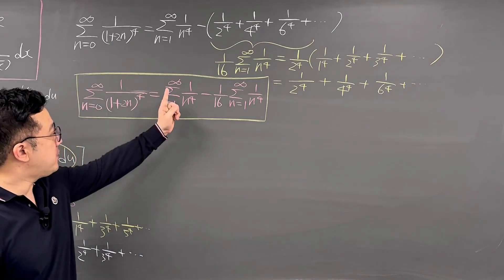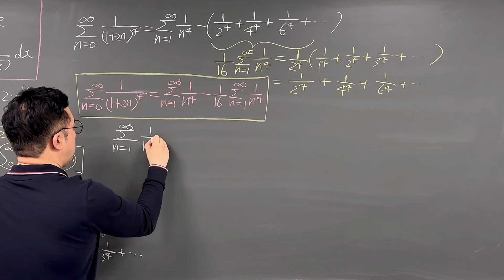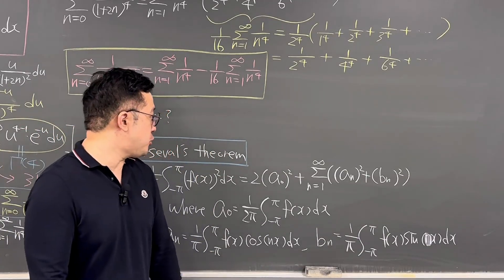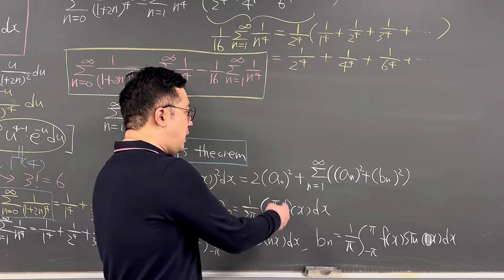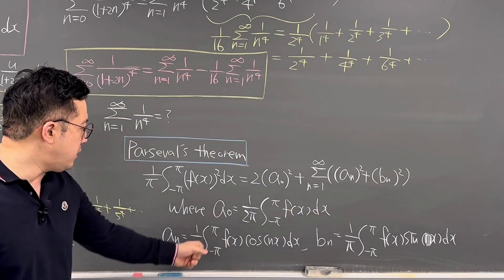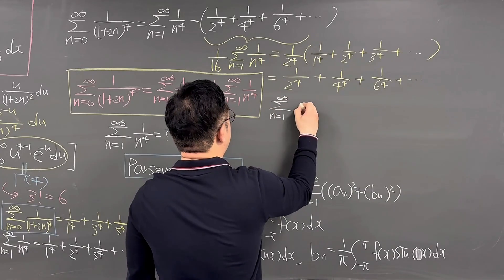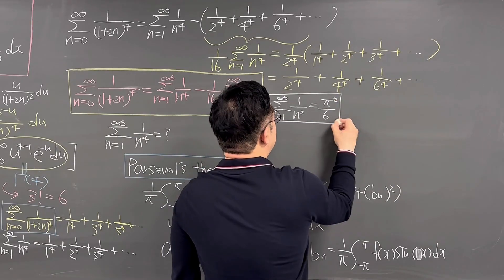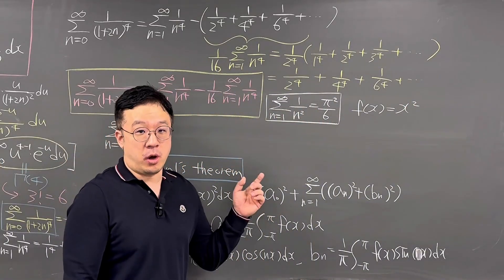Now we need the value of the summation from n=1 to infinity of 1/n^4. We'll use Parseval's theorem, which states: (1/π) times the integral from -π to π of f(x)² dx equals 2a₀² plus the summation from n=1 to infinity of (aₙ² + bₙ²). We'll use the known result Σ 1/n² = π²/6, and let f(x) = x².